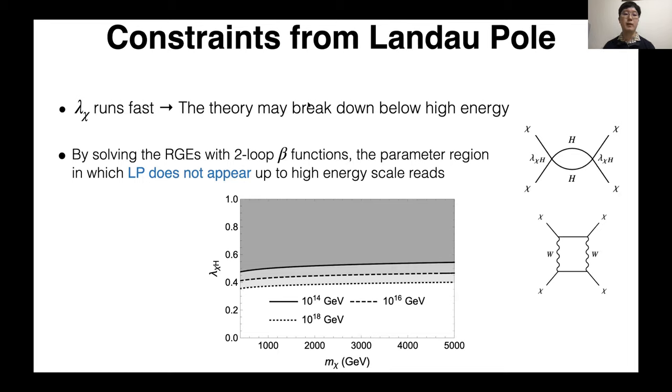At first, I'll talk about constraints from Landau pole. These diagrams make lambda_chi run fast, so the theory may break down below high energy. By solving the renormalization group equations with two-loop beta functions, the parameter region in which Landau pole does not appear up to high energy scale is this figure. Shaded region is excluded. For example, if we insist that Landau pole does not appear up to 10^14 GeV, lambda_chi_h should be less than 0.5.